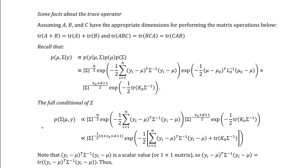We now want to derive the full conditional distribution of sigma. Before we do that, we need to recall some facts about the trace operator. The trace operator is simply the sum of the diagonal elements of a matrix. Assuming A, B, and C are three matrices with appropriate dimensions, first, the trace of the sum of two matrices is the sum of the trace of the individual matrices. Additionally, the trace of the matrix product A times B times C equals the trace of B times C times A, which also equals the trace of C times A times B. This is known as the cyclic property of the trace operator.